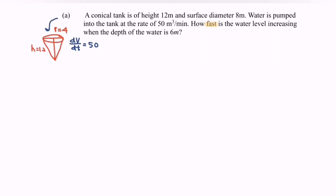The question asks how fast the water level is increasing when the depth of the water is 6 meters. Since the water is being pumped in, we expect a positive answer. So we are looking for dh/dt when h = 6.